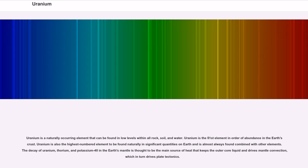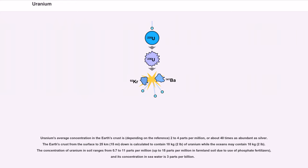Uranium is also the highest numbered element to be found naturally in significant quantities on Earth and is almost always found combined with other elements. The decay of uranium, thorium, and potassium-40 in the Earth's mantle is thought to be the main source of heat that keeps the outer core liquid and drives mantle convection, which in turn drives plate tectonics. Uranium's average concentration in the Earth's crust is, depending on the reference, two to four parts per million, or about 40 times as abundant as silver. The Earth's crust from the surface to 25 kilometers down is calculated to contain 10^17 kilograms of uranium while the oceans may contain 10^13 kilograms. The concentration of uranium in soil ranges from 0.7 to 11 parts per million, up to 15 parts per million in farmland soil due to use of phosphate fertilizers, and its concentration in seawater is 3 parts per billion.